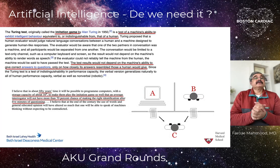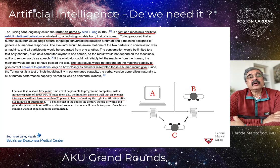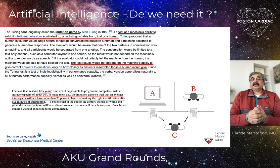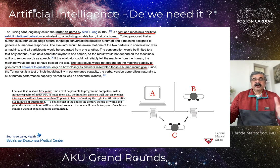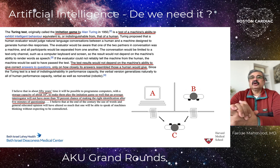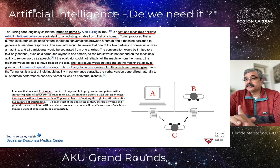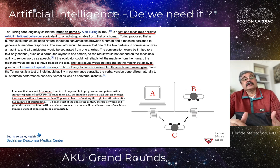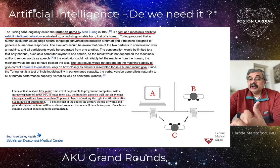That question led to his famous Turing test, also known as the imitation game — a test of a machine's ability to exhibit intelligent behavior equivalent to or indistinguishable from a human. An observer, isolated from both a computer and a person, would ask questions to each and try to guess which was the computer and which was the human. The test result would not depend on the machine giving correct answers, only how closely its answers resembled those a human would give.